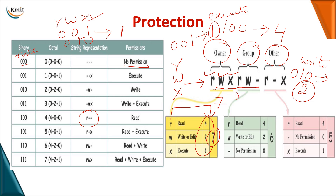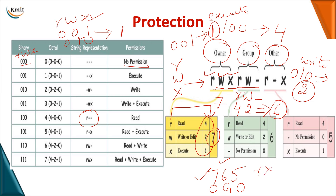For the group, if only read and write are given — with no execute permission — the decimal values are 4 and 2, which sum to 6. For others, if read and execute are given, the values are 4 and 1, summing to 5. So the combined permission is 7, 6, 5 — meaning the owner can perform all operations, the group can perform only read and write, and others can only perform read and execute. Read, write, and execute indicate the type of access; owner, group, and others indicate the type of users.